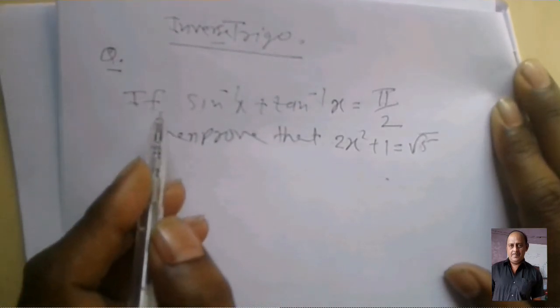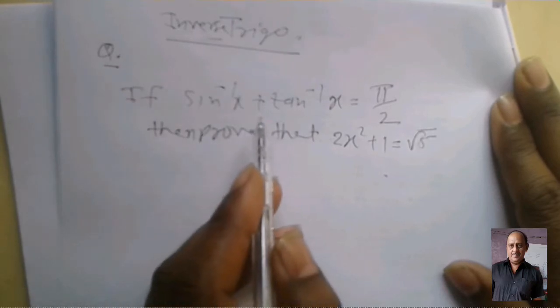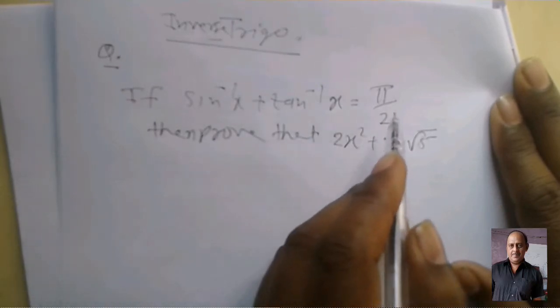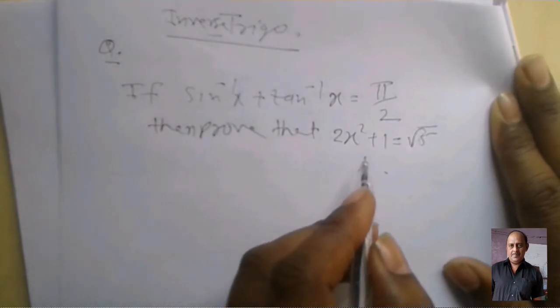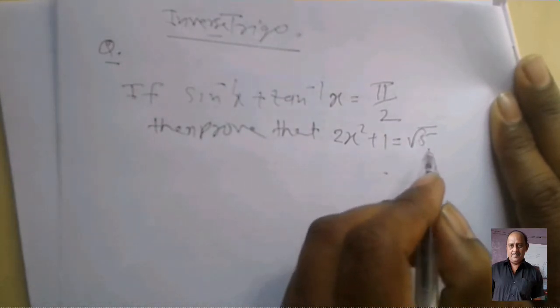Here question: if sin inverse x plus tan inverse x equal π/2, then prove that 2x² + 1 equal to root 5.